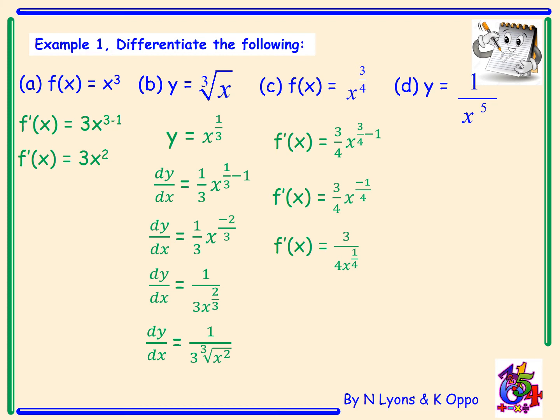Last example, example D: We need to prepare this first because we have a fraction. We can't differentiate with x on the bottom of a fraction. Using our rules of indices, we'll bring x up and it will be x to the power of minus 5. Differentiating, dy/dx equals negative 5x, and the power is negative 5 take away 1. dy/dx equals negative 5x to the power of negative 6. Again we can rewrite with a positive power: negative 5 over x to the power of 6.